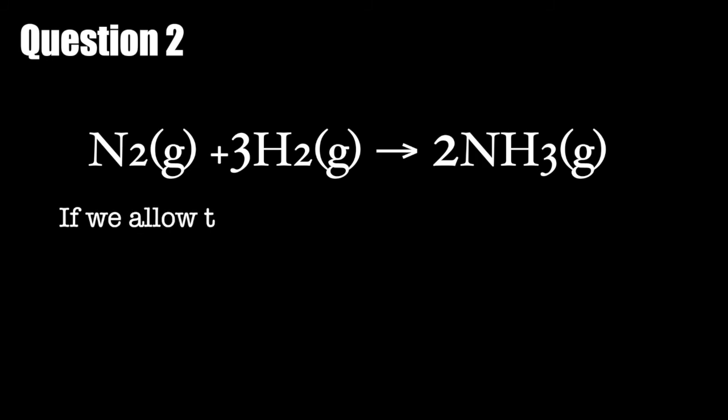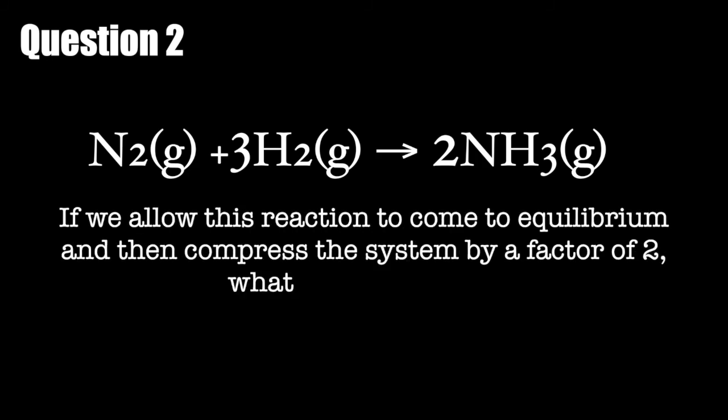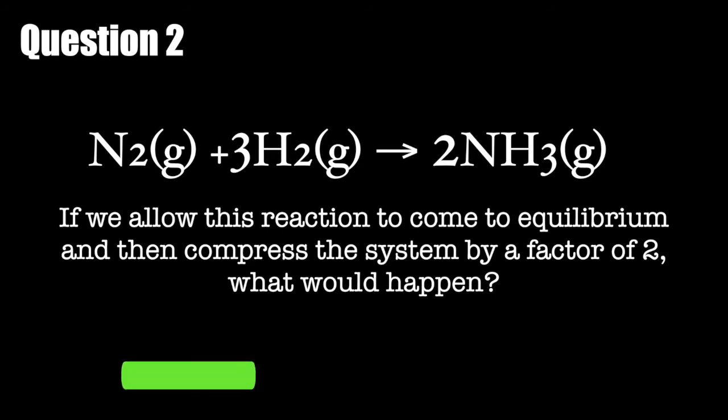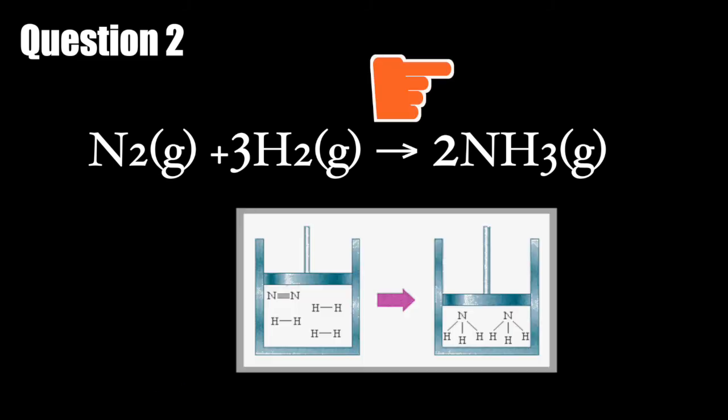Question number 2. If we allow this reaction to come to equilibrium and then compress the system by a factor of 2, what would happen? The reaction shifts to the right, because this reduces the number of gas particles, which decreases the total pressure on the system.